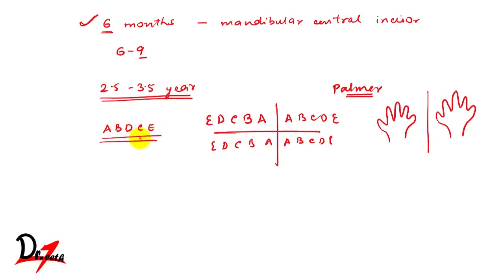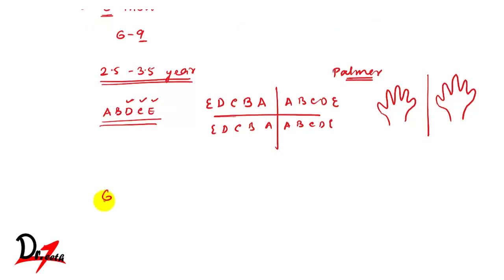It is not A, B, C, D, E — it is A, B, D, C, E. That means the central incisor erupts first, then the lateral incisor, then the first molar, then the canine, and then the second molar. This is the eruption sequence.